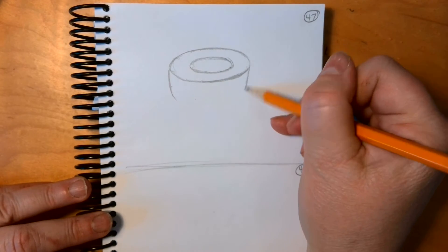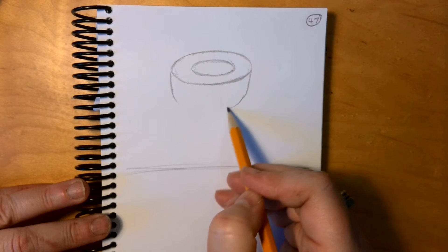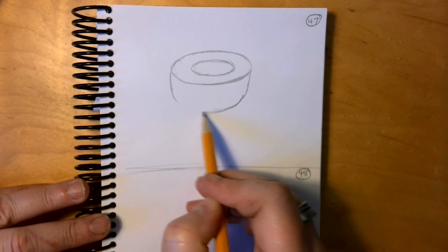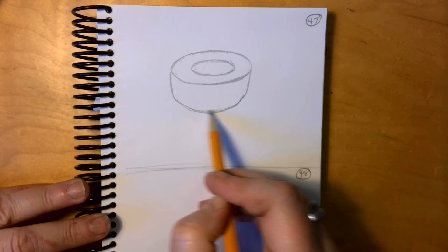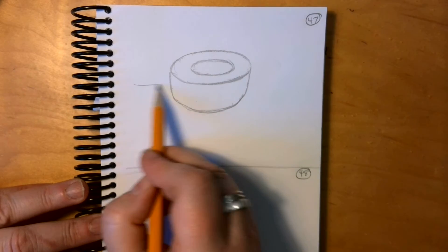On the bottom, we're going to put a sphere, almost like a half sphere. It's going to be a little flatter on the bottom because it's going to be like a bowl. And then a ground line.